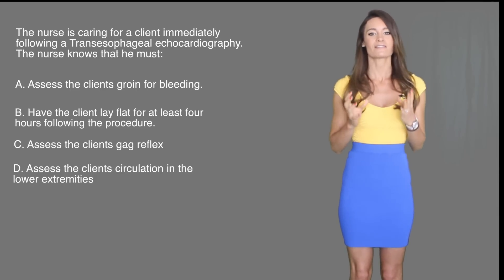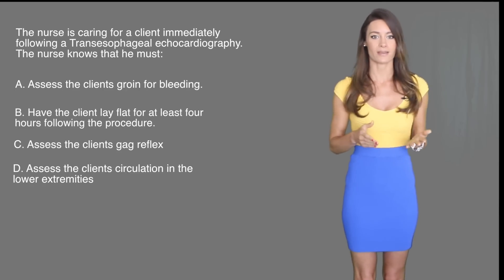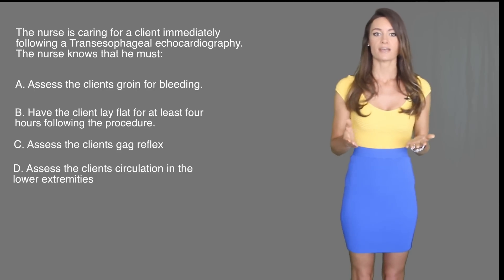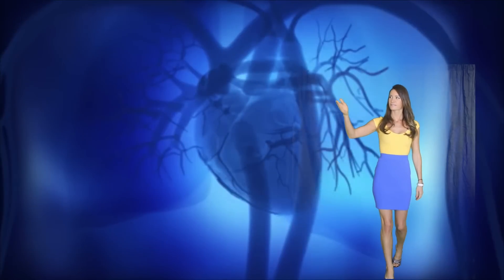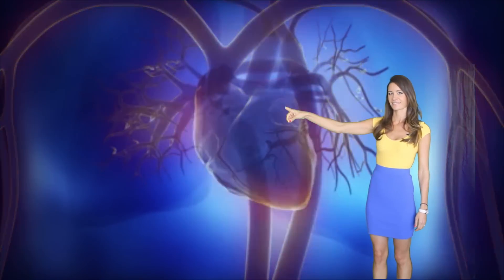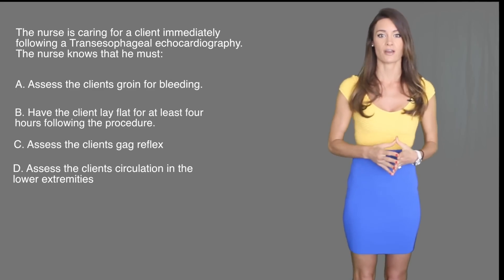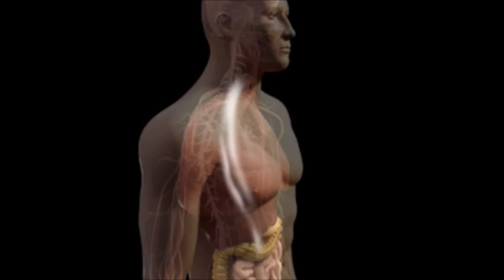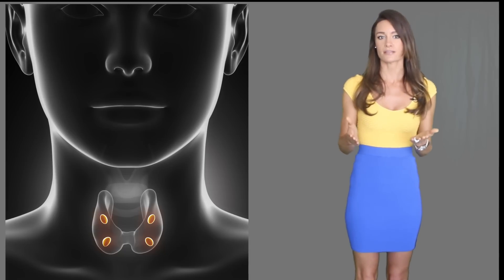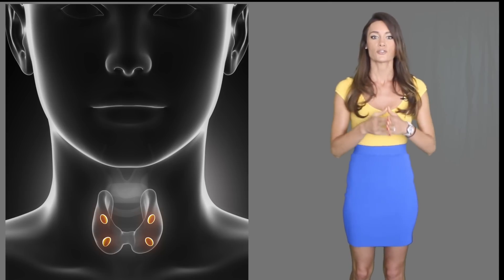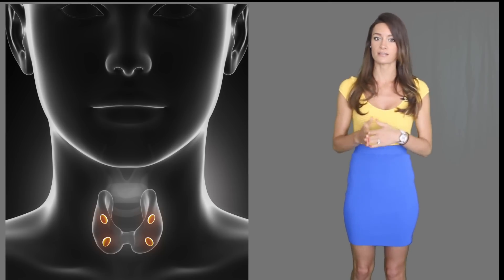This question can be confusing unless you know exactly what a transesophageal echocardiography is. Another diagnostic exam for an aneurysm is aortography, which is an invasive procedure where an interventional cardiologist enters into the groin and injects contrast while x-ray images are taken to locate the aneurysm — answers A, B, and D would apply to that procedure. However, the client underwent a transesophageal echocardiography, not an aortography. During a TEE, the client is given conscious sedation and a local anesthetic spray to eliminate the gag reflex. Therefore, it is important for the nurse to assess the client's gag reflex. Answer C is correct.